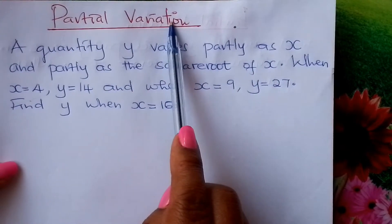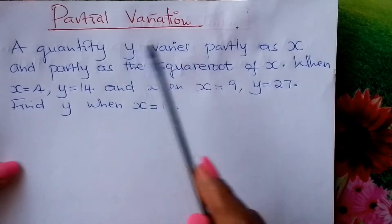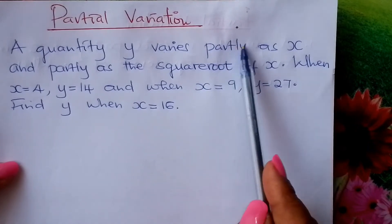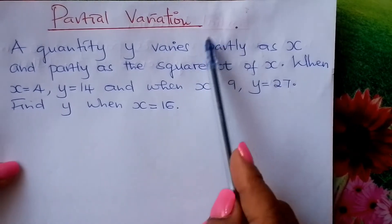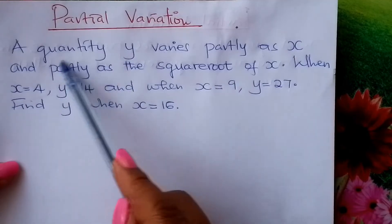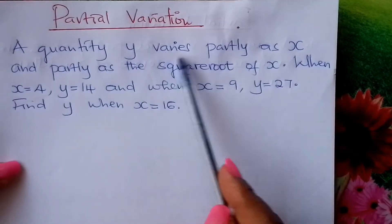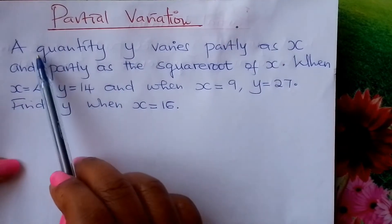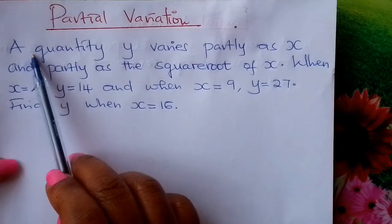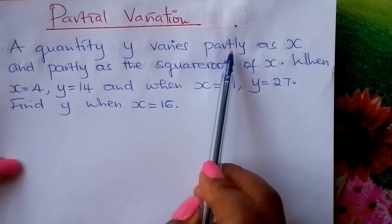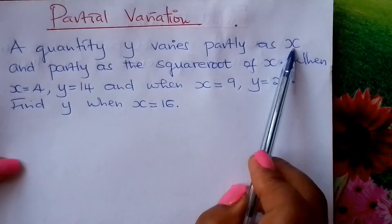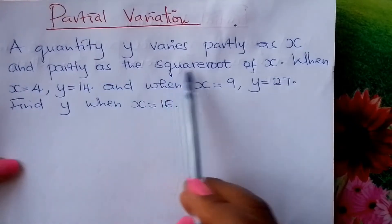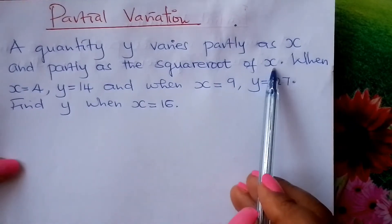Some students ask: what is the difference between joint variation and partial variation? Whenever you see the term 'partly,' you're dealing with partial variation. So, a quantity Y varies partly as X and partly as the square root of X.